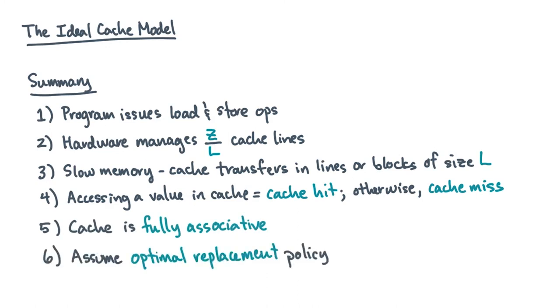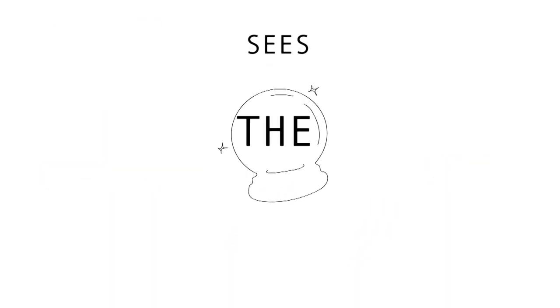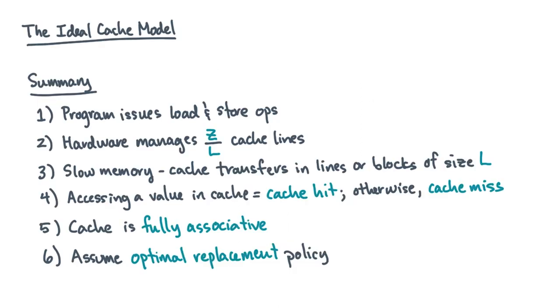The cache we'll assume is fully associative. Lastly, when we need to evict a cache line, we'll assume an optimal replacement policy. This policy sees the future.